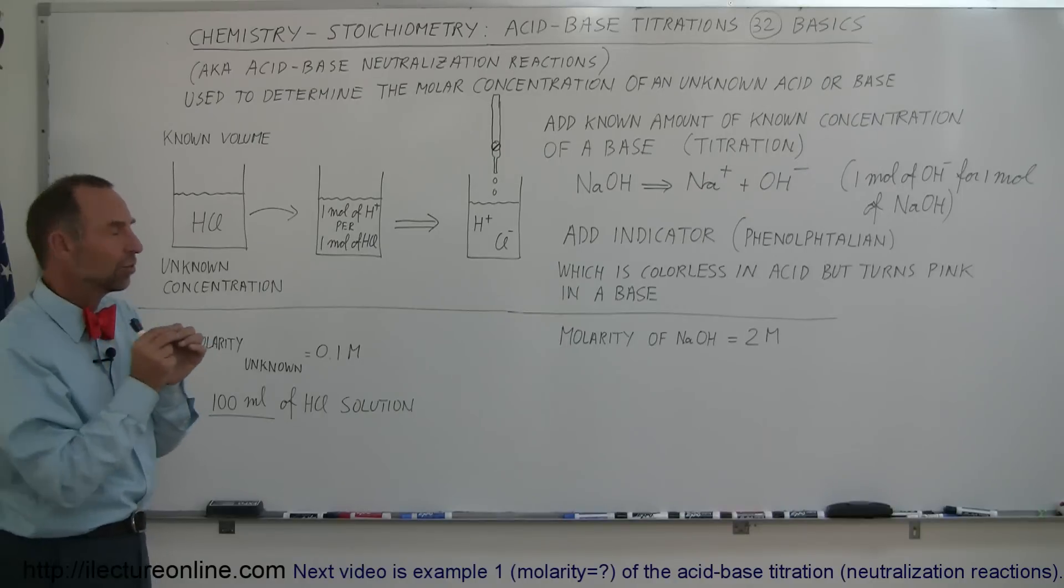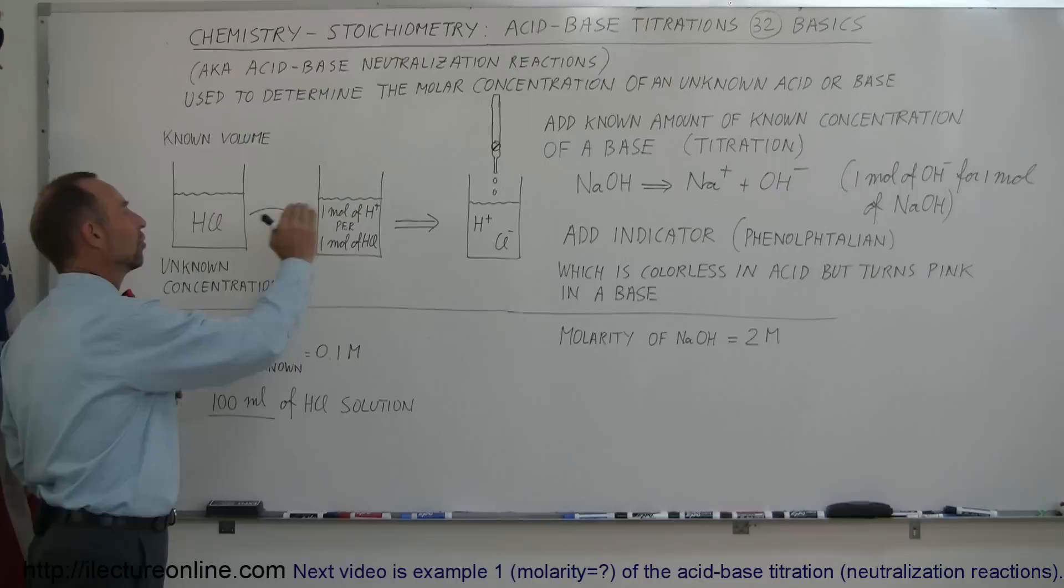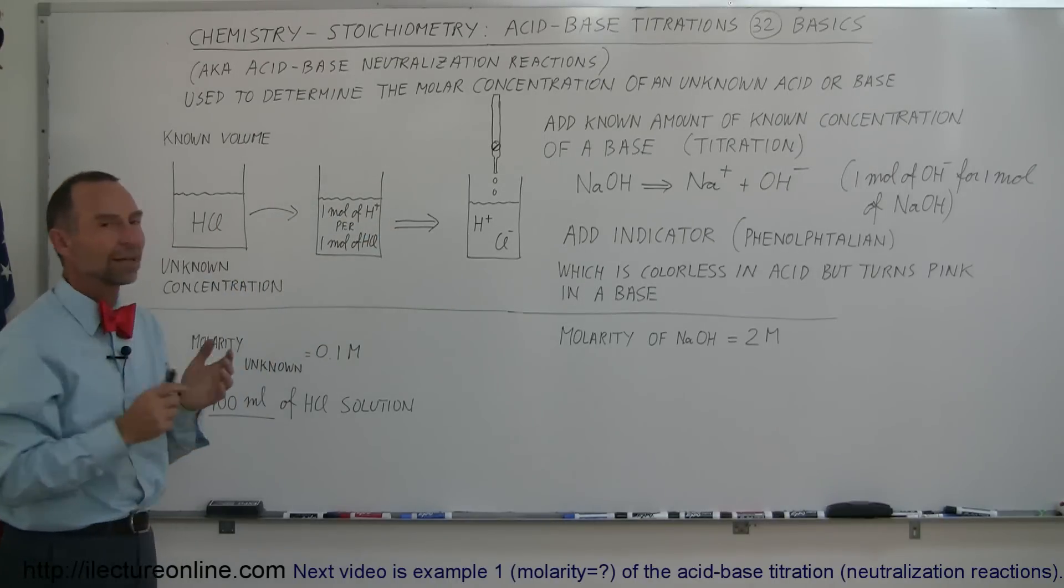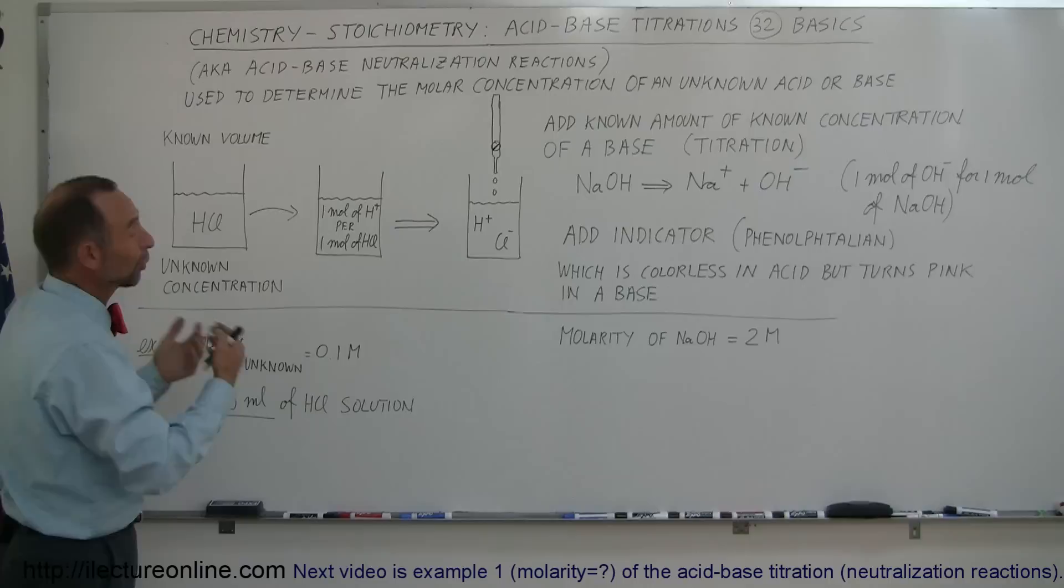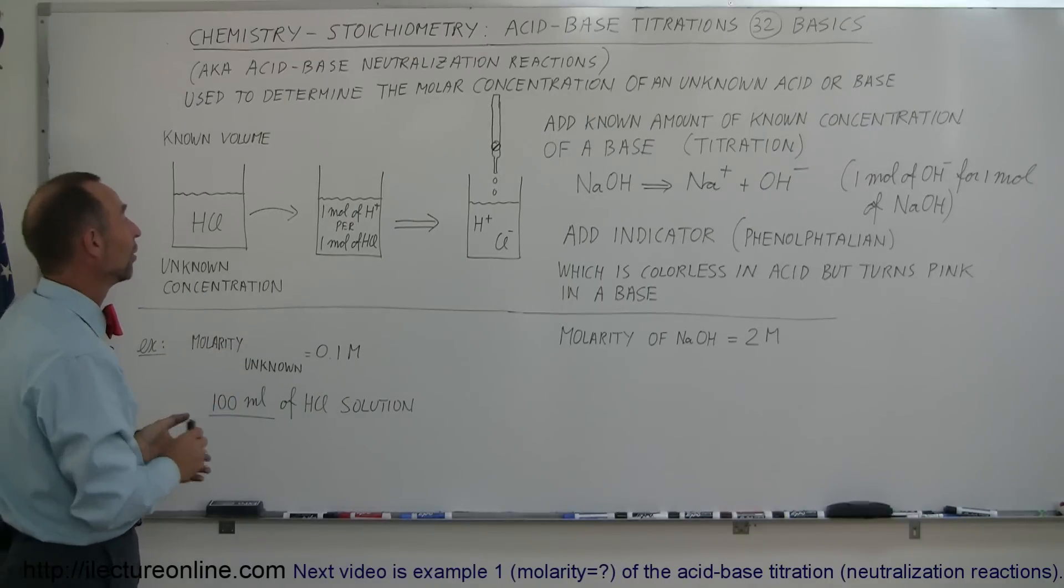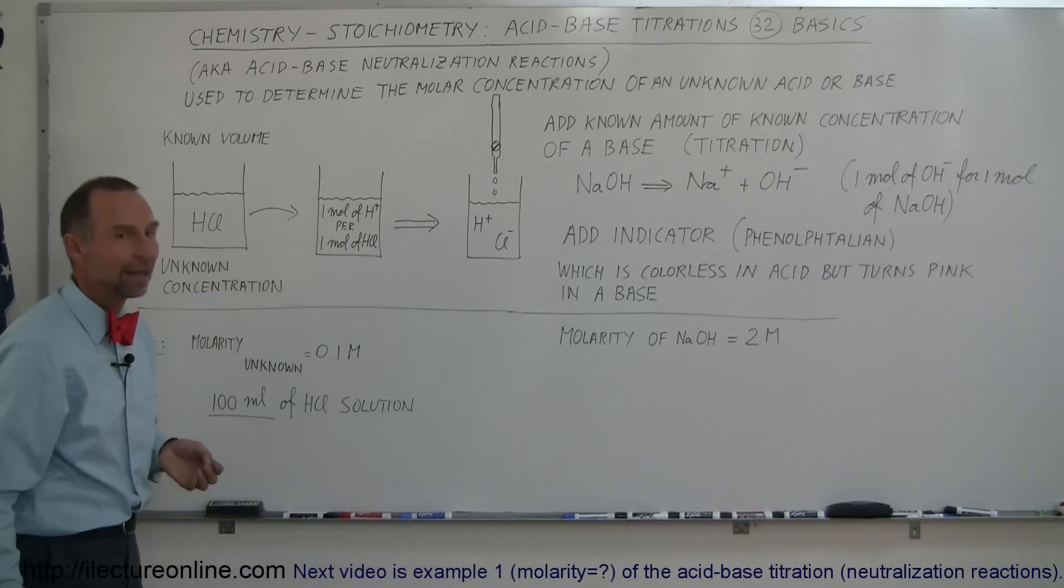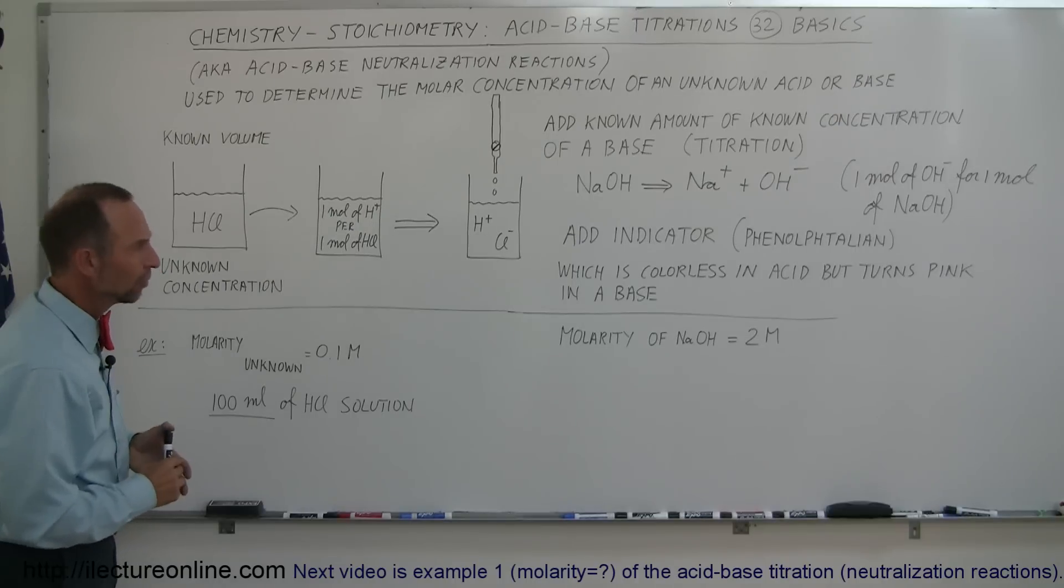We also know that when this dissociates, we'll have just as many hydrogen ions as we had hydrogen chloride when we started with. For one mole of hydrogen ions in the solution, we'll have one mole of hydrogen chloride. So how do we know what the concentration was?